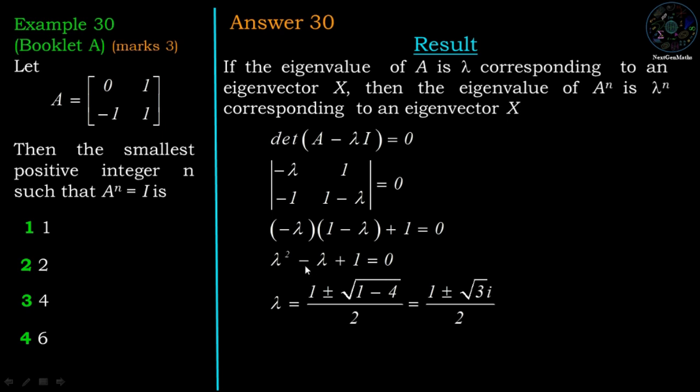Therefore, we have b equal to minus 1, a is equal to 1, and c is equal to 1. Then we have lambda equal to 1 plus or minus square root of 1 minus 4 is minus 3, so square root of minus 3 is root 3i divided by 2.